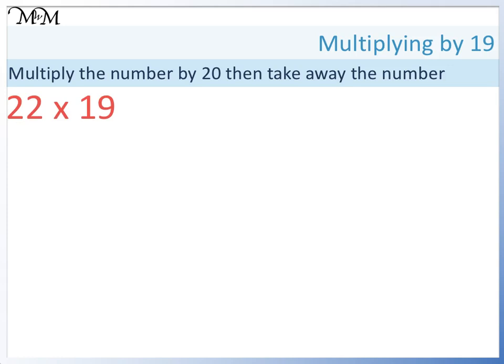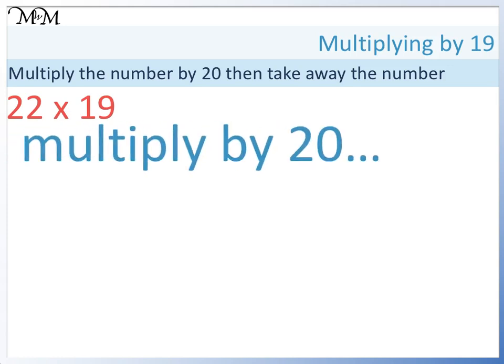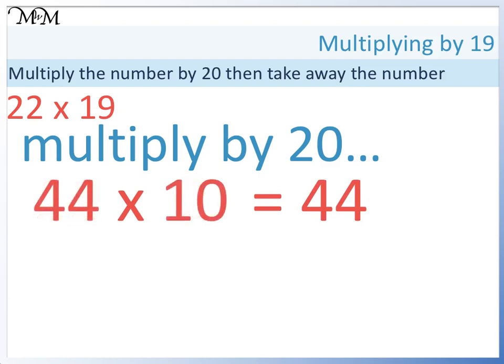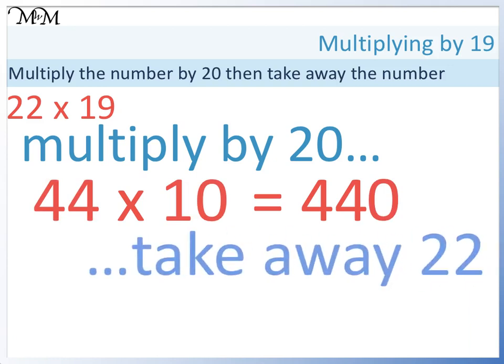22 times 19. First, we will find 22 times 20, so we times by 2 and then by 10. 22 times 2 equals 44. 44 times 10 equals 440. We must take away 1 lot of 22. 440 take away 22 equals 418.